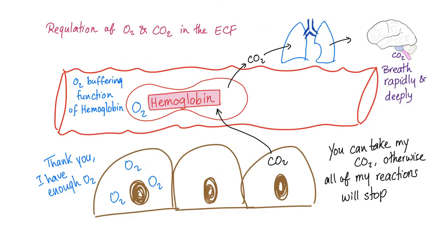Regulation of oxygen and carbon dioxide in the extracellular fluid. Here is your blood vessel — it has red blood cells and they have hemoglobin. Hemoglobin carries oxygen. Oxygen is given to the tissue. But when the oxygen in the tissue is very abundant, they will tell the hemoglobin thank you, we have enough oxygen. So the oxygen stops flowing from hemoglobin to the cell because hemoglobin has a high affinity to oxygen — it really loves oxygen too much.